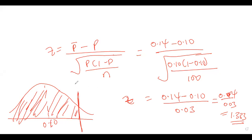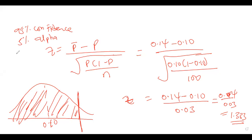If we are testing at 95% confidence, that corresponds to a 5% alpha. For a one-tailed test, the critical z-value is 1.645.